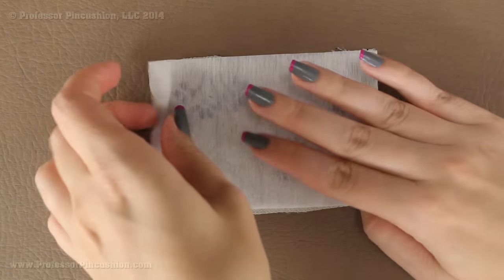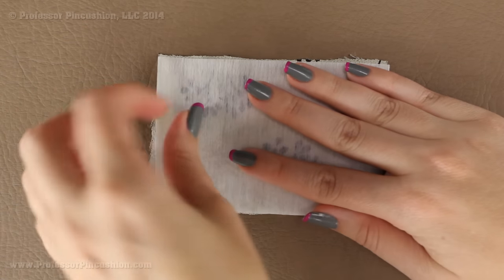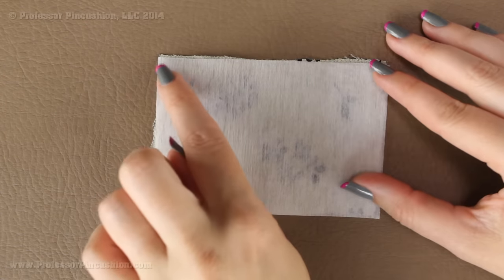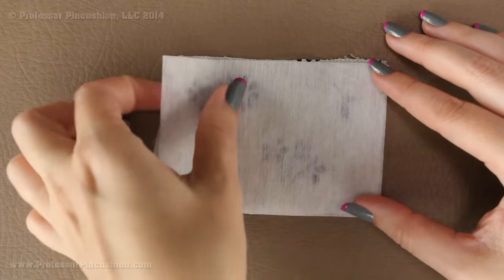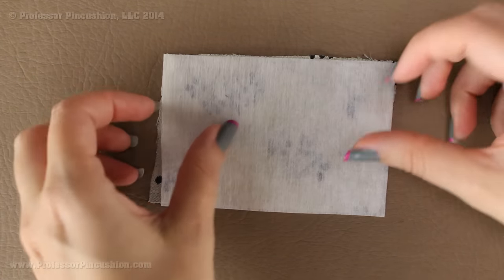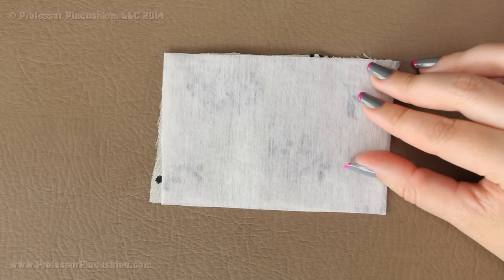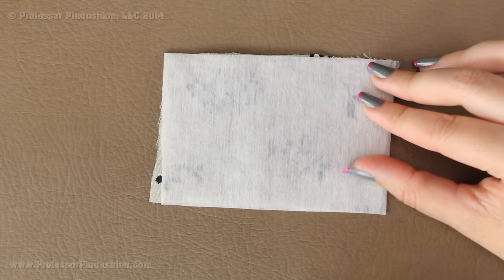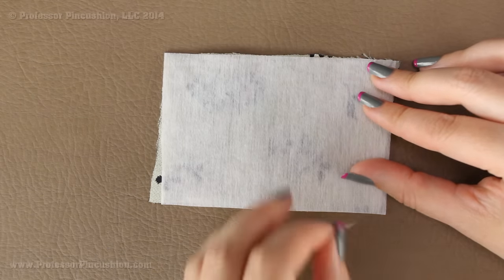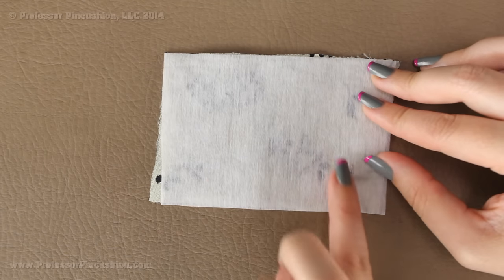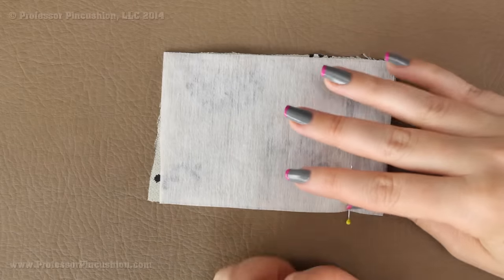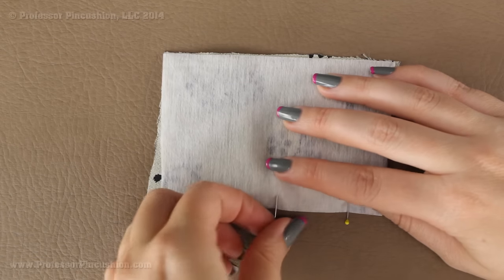And then I'm going to pin around the perimeter of the whole piece because then we're going to do a basting stitch around the whole thing so then we can treat it as one fabric piece. So I'm just going to grab a couple of pins here and I like to place my pins the same as I do with sewing so they're going perpendicular to the fabric.